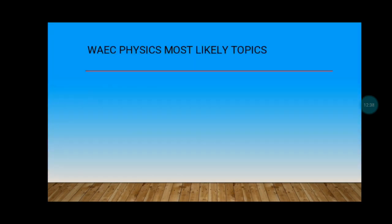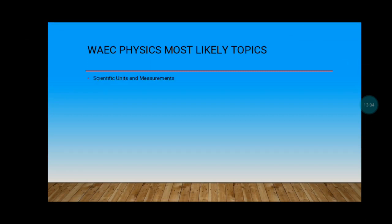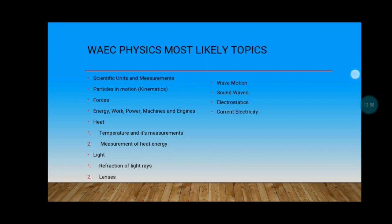The most likely WAEC physics topics are: scientific units and measurement, particles in motion and kinematics, forces, energy/work/power, machines and engines, heat (including temperature and its measurement, and measurement of heat energy), light (refraction, lenses), sound waves, electrostatics, current electricity, magnets and magnetic fields, atomic physics, and nuclear physics. Magnets, atomic physics, and nuclear physics mostly drop, so students who focus only on earlier topics often miss these. Electronics is also on the list. Click on the video floating on the screen to access another video.